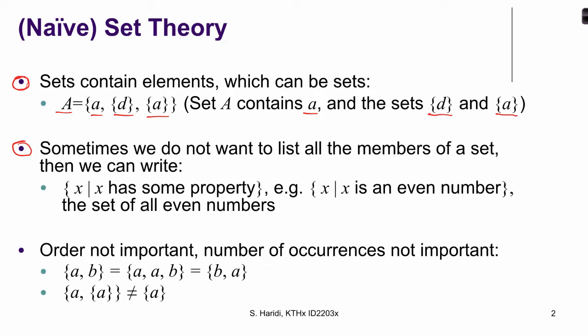Sometimes we do not want to list all the members of a set. Then we write it as follows. We write the set X between curly brackets and say X has a certain property. For example, X is an even integer. So this notation describes the set of all even numbers.